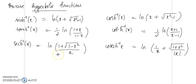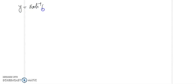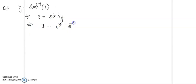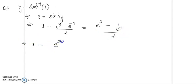Let us look at how we have obtained this — how we reached this formula. Let us see how we get sinh⁻¹(x) as ln of x plus root of x² + 1. Let y equal to sinh⁻¹(x). Then by the definition of inverse function, x = sinh(y). Now, sinh(y) = (e^y − e^(−y)) / 2, which is (e^y − 1/e^y) / 2. So x can be written as (e^(2y) − 1) / (2e^y).